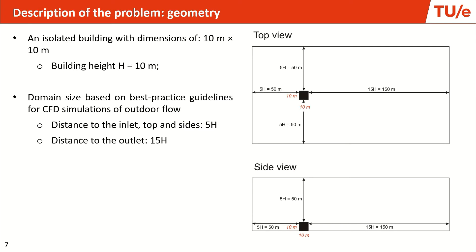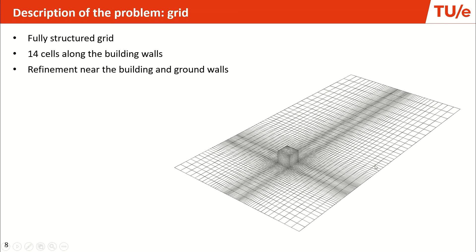The geometry we're going to simulate is a simple building: 10 by 10 meter width and length, and 10 meter height. We see the top view of the domain and we're going to create a computational domain around it. The size of the domain is based on the best practice guidelines for safety simulations of outdoor flow, which recommends five times the building height H distance to the inlet, to the side of the domain, and to the top of the domain, and 15H distance to the outlet of the domain. We're going to create a fully structured grid with a minimum of 14 cells along the building edges, also based on recommendations in the literature, with refinements near the building walls and near the ground.